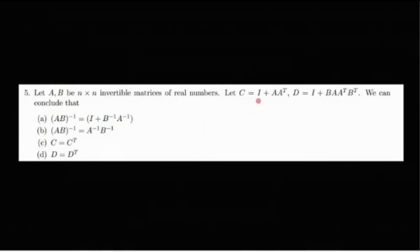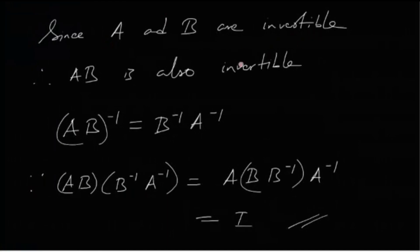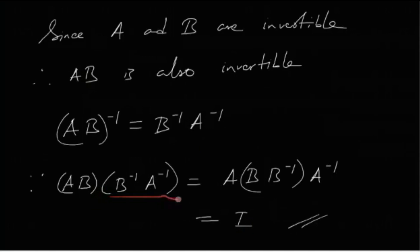Question 5: Let A and B be n×n invertible matrices of real numbers. Let C = I + AA^T and D = I + B·AA^T·B^T. We need to determine which conclusions are correct. Since A and B are invertible, AB is also invertible and (AB)^{-1} = B^{-1}A^{-1}. Option A says (AB)^{-1} = I + B^{-1}A^{-1}, which is wrong. Option B says (AB)^{-1} = A^{-1}B^{-1}, which is also wrong.